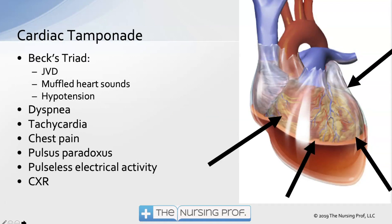That brings us to cardiac tamponade — we now have so much fluid around the heart compressing it that we don't have enough cardiac output to maintain normal function. The classic triad of symptoms is Beck's triad: jugular venous distension, muffled heart sounds, and hypotension. Think about those three things together — hypotension and jugular venous distension could easily be heart failure, but we don't get muffled heart sounds with heart failure. That's our big key and red flag.